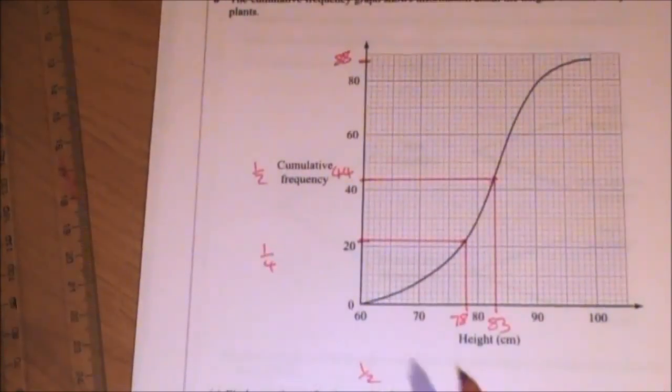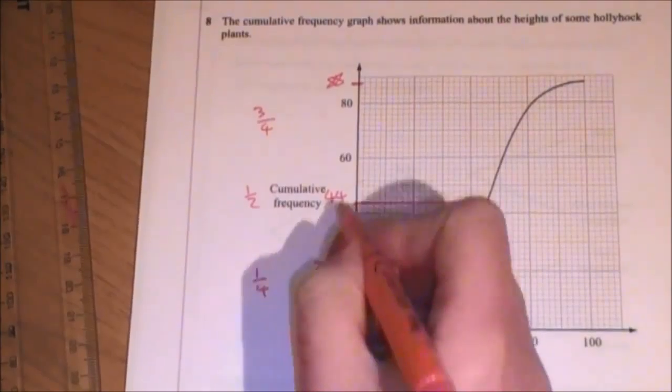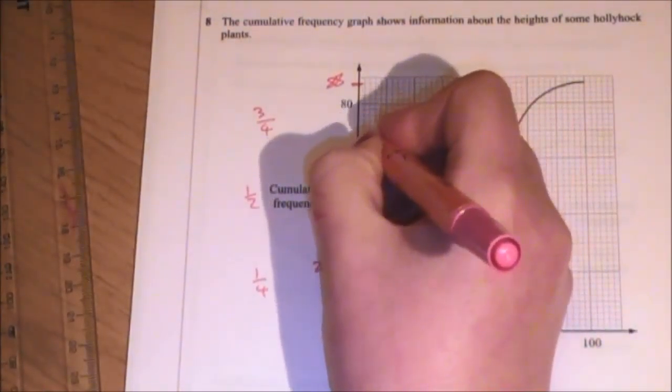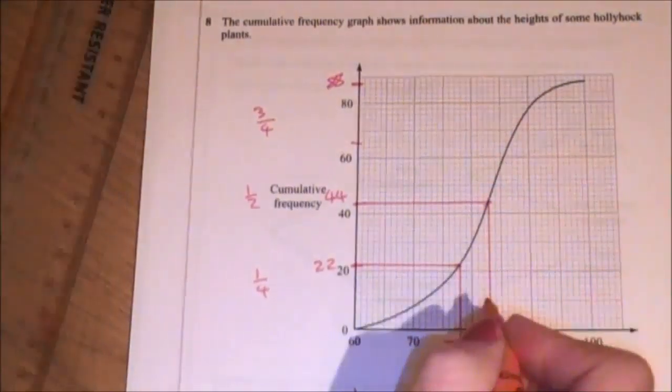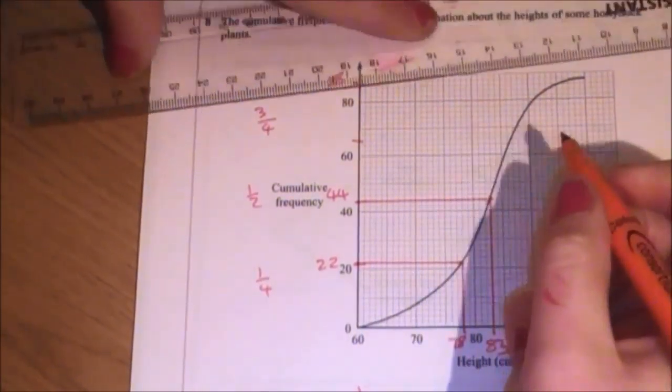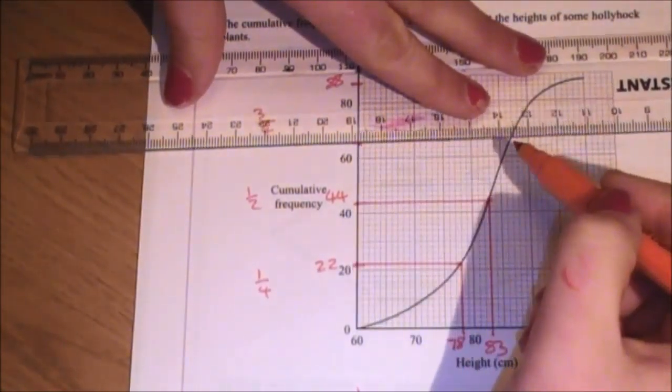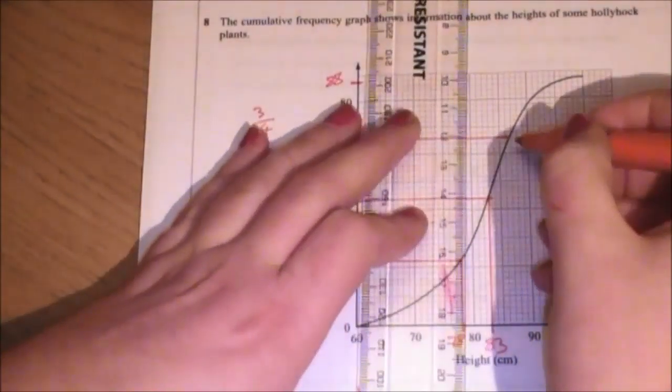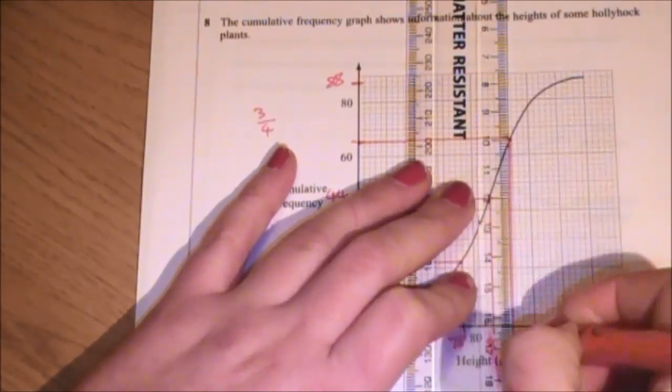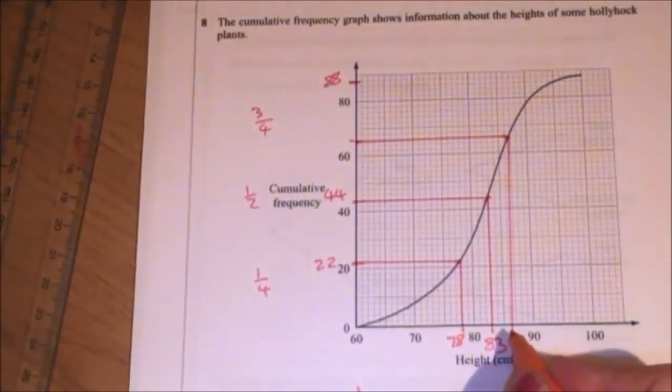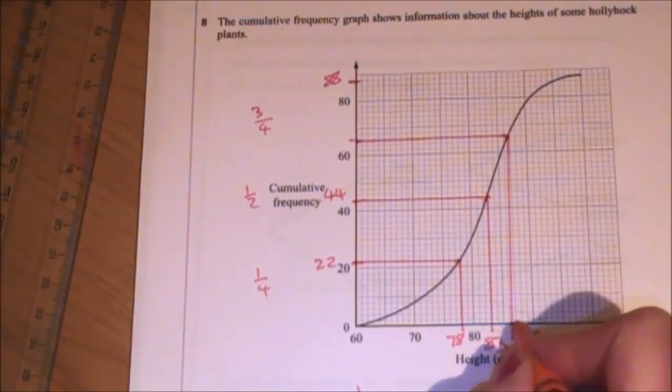Now, for my upper quartile, which is three quarters. So I could add, if I wanted, 22 and the 44 together, which would give me 66. 62, 64, 66. Draw across, draw down. That's ended up giving me 85, 86, 87.